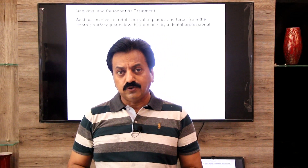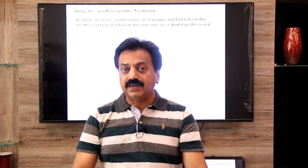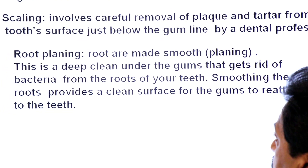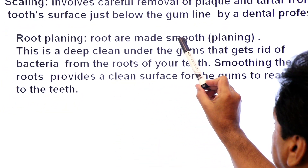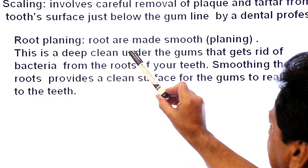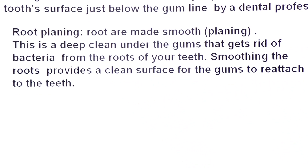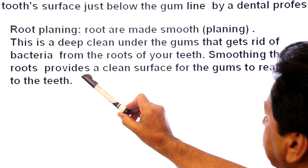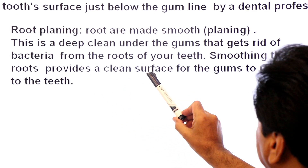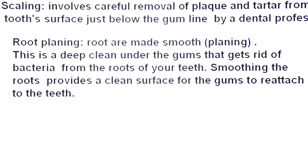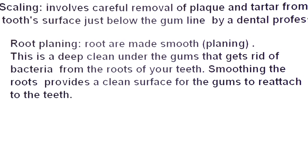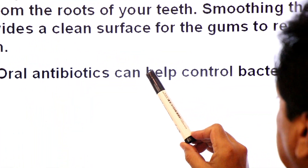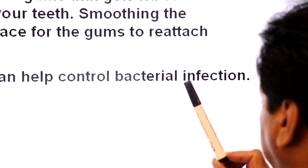The second treatment option is root planning, also known as root smoothing. This is a deep clean under the gums that gets rid of bacteria from the roots of your teeth. Smoothing the roots provides a clean surface for the gums to reattach to the teeth. Antibiotics can also help control bacterial infection.